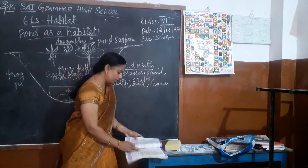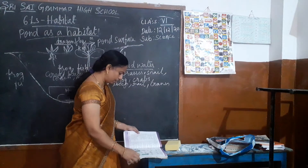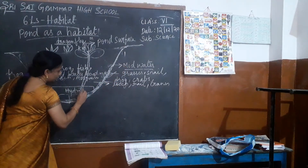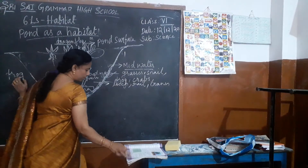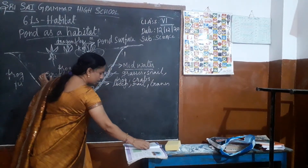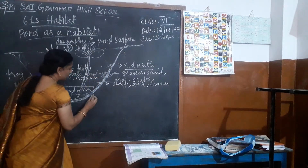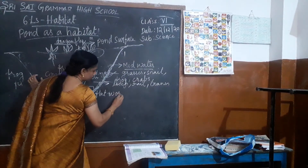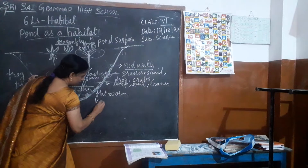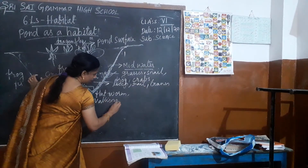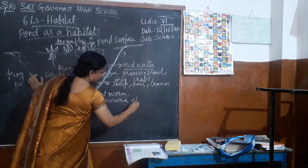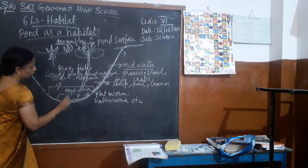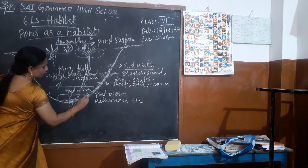Hydrilla — see it in page number 16. You can see the hydrilla. And what type of animals? We can see animals like flatworms, planarians, and also dead bodies of animals and the plants.